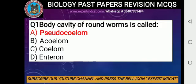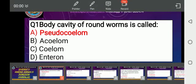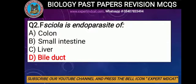Options are: A) Pseudocoelom, B) Acoelom, C) Coelom, D) Enteron. Roundworms have a pseudocoelom because they are pseudocoelomates. Pseudocoelom means having a false body cavity. It is present between the body wall and digestive tract, and mesoderm is absent. Such a body cavity is called pseudocoelom.